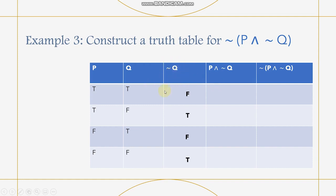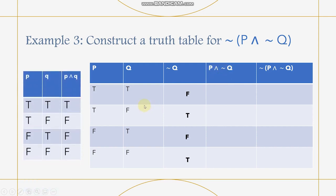We will now base on the table using P and ¬Q for the conjunction. So P∧¬Q: we base on the first column (P) and the ¬Q column. T∧F gives F. T∧T gives truth. F∧F gives false. And when P is false and the ¬Q is true (third row), the answer is false.